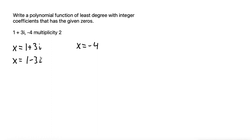So if we solve each of these equations for zero, we can take our x equals 1 plus 3i and move everything over to the left-hand side. So we get x minus 1 minus 3i equals 0. For this factor, we can get x minus 1 plus 3i equals 0. And then for this factor, we get x plus 4 equals 0.